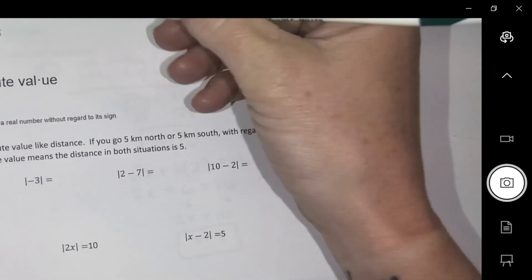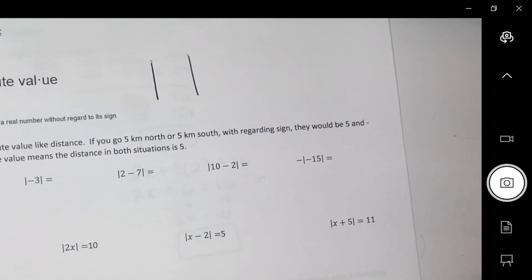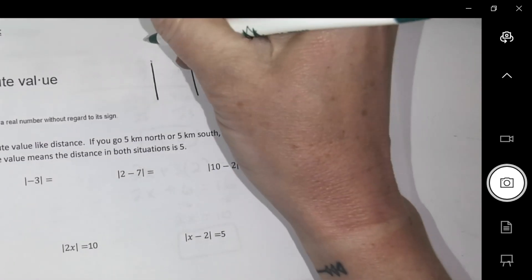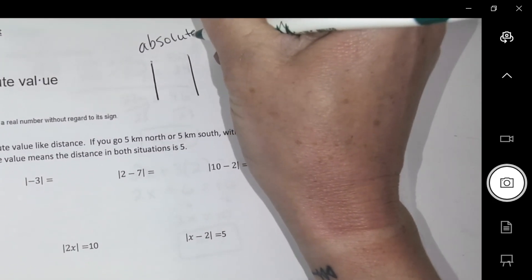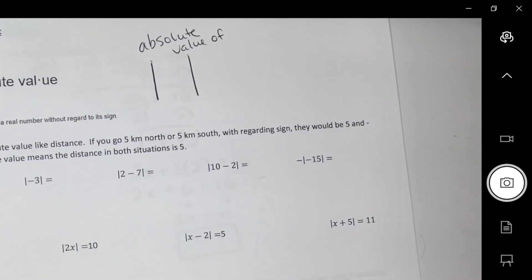Okay, absolute value is symbolized with these flat brackets. That means the absolute value of whatever's inside.